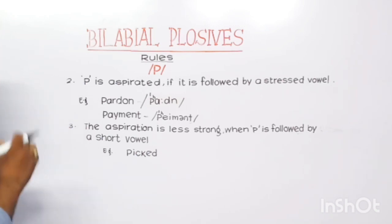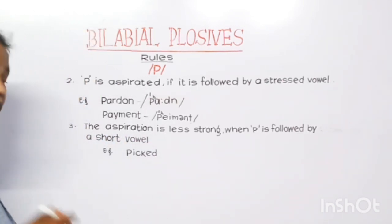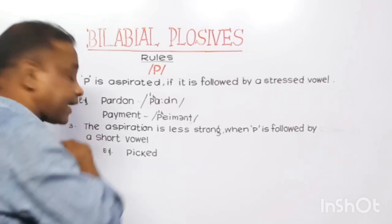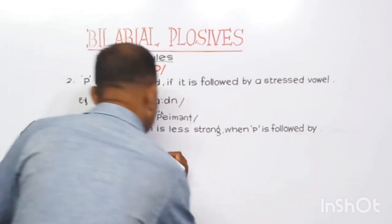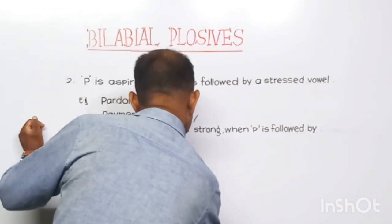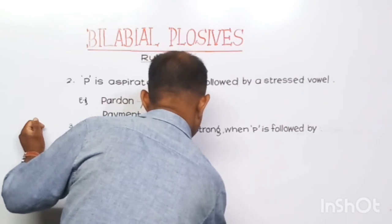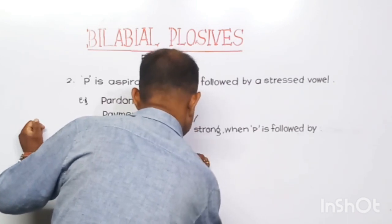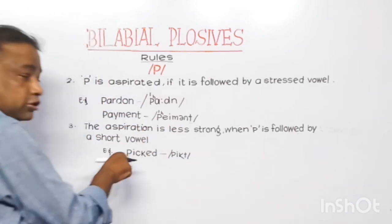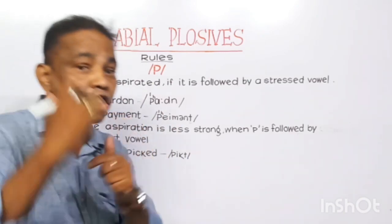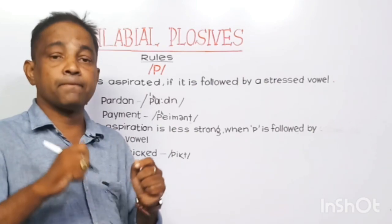Rule number three: the aspiration is less strong when /p/ is followed by a short vowel. If /p/ is followed by a short vowel, you cannot say 'peaked' with heavy aspiration. You have to pronounce it as 'peaked' with reduced aspiration. Even if there is stress, with a short vowel you should not aspirate it heavily — that would be wrong.